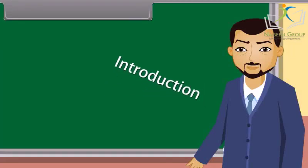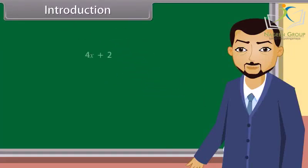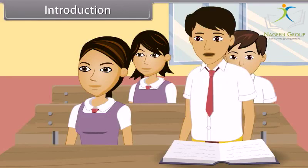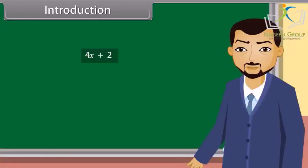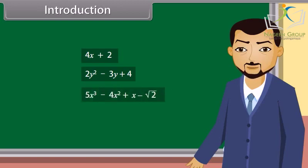Students, look at this polynomial. What can you say about this? This is a polynomial in the variable x of degree 2. Similarly, 2y square minus 3y plus 4 is a polynomial in the variable y of degree 2, and 5x cube minus 4x square plus x minus square root 2 is a polynomial in the variable x of degree 3.